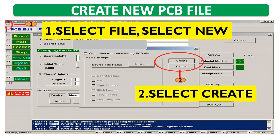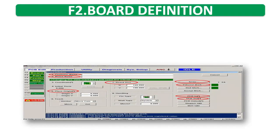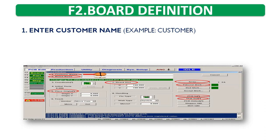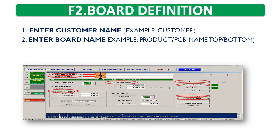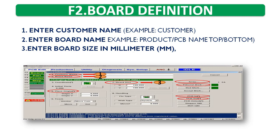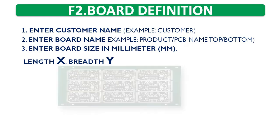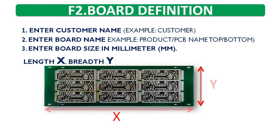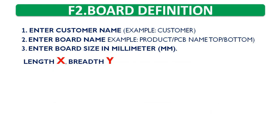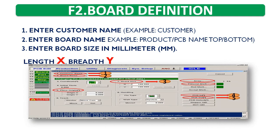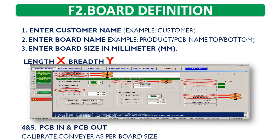F2 board definition: first enter customer name (example: customer), second enter board name (example: product PCB name top or bottom), third enter board size in millimeters — Length X, Breadth Y. Fourth and fifth, PCB in and PCB out: calibrate conveyor as per board size.